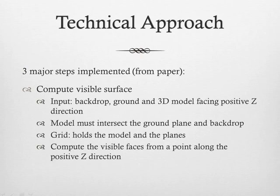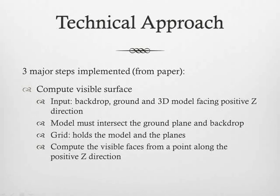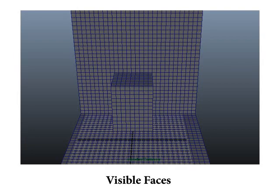We are going to talk about three steps, of which we plan to implement two. One is computing the visible surface and the second is computing a pop-up realizable surface. The tool inputs a backdrop, a ground plane, and a 3D model that intersects the backdrop and ground plane facing the positive Z direction. We then create a grid that holds the model and the two planes, and compute visible faces from a point along the positive Z direction.